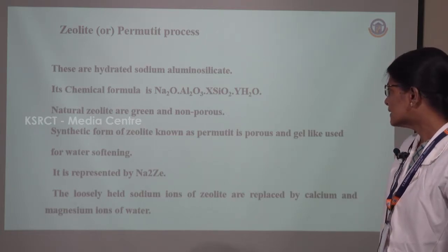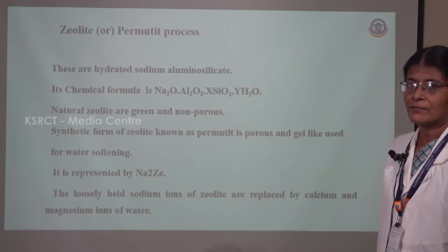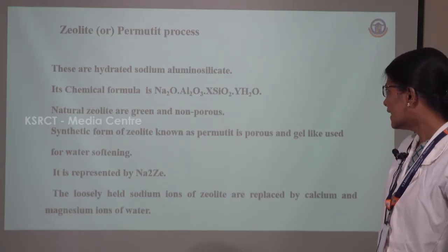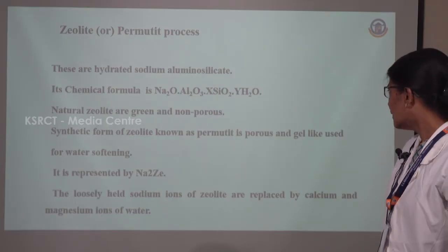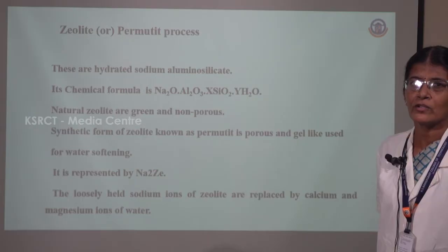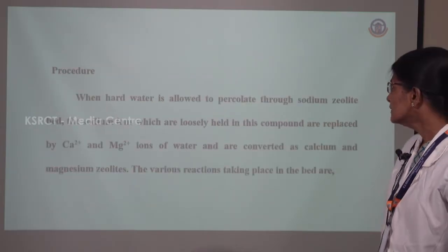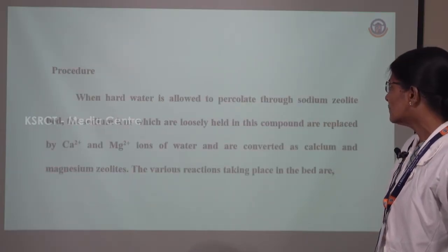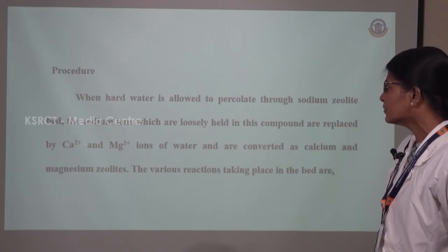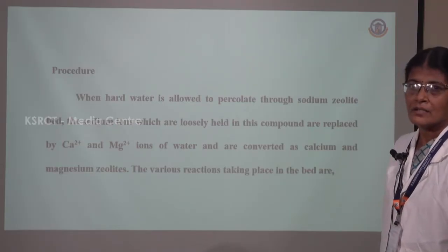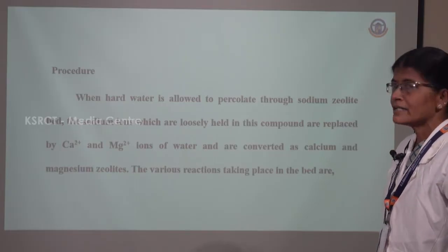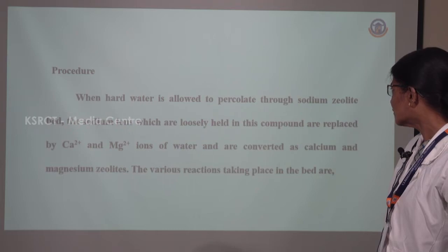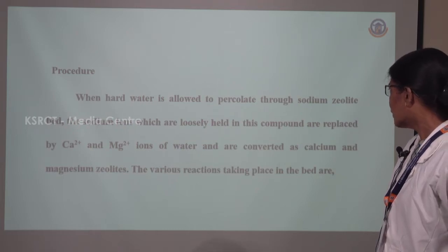Zeolite is usually represented as Na₂Ze. This sodium zeolite consists of loosely held sodium ions, and therefore these loosely held sodium ions will be replaced by the calcium and magnesium ions of hard water. In this method, the hard water is allowed to percolate through the sodium zeolite bed. The sodium ions which are loosely held in the bed are replaced by the calcium and magnesium ions of the water, and the products formed will be calcium and magnesium zeolites.